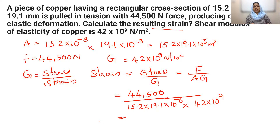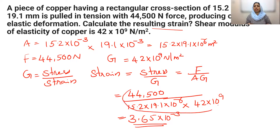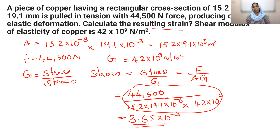The answer will be 3.65 × 10⁻³. We can solve this using a normal division method or calculate using logarithms. We substitute the formula values and calculate. The textbook answer is approximately 3.65 × 10⁻³.